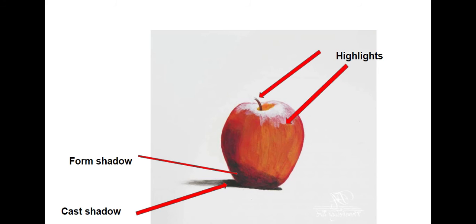The object, the apple, is blocking the light and forming a shadow on the surface below it. Did you find the form shadow, cast shadow and highlights?